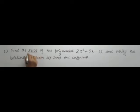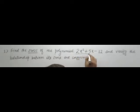Our question here is: find the zeros of the polynomial 2x² + 5x - 12 and verify the relationship between its zeros and coefficients.